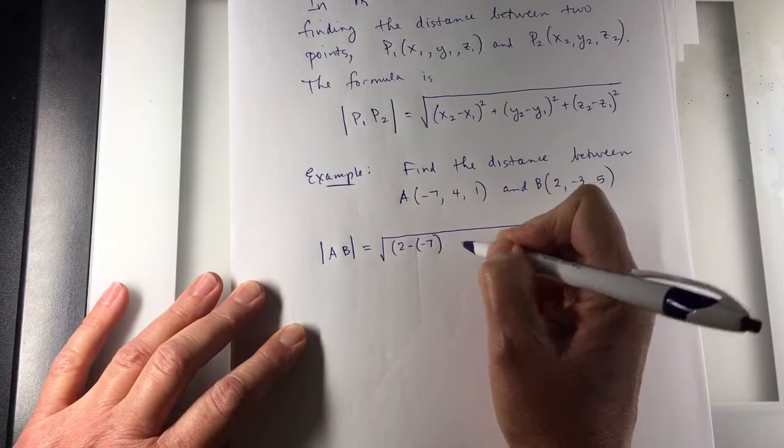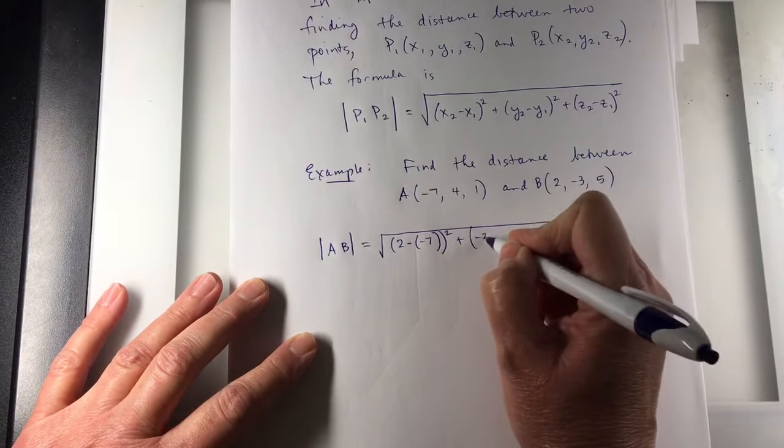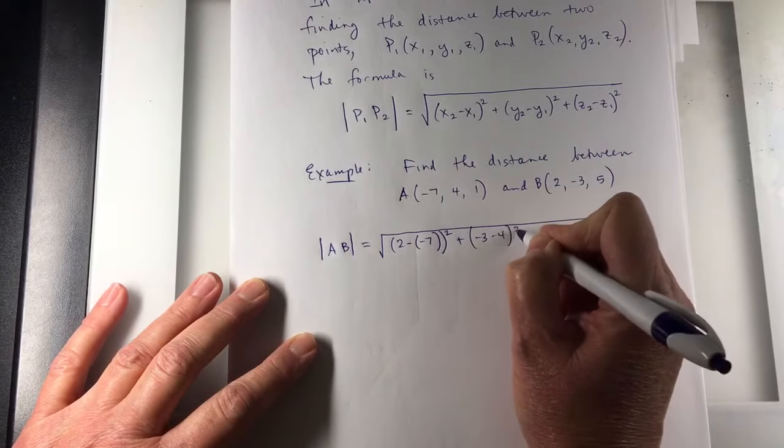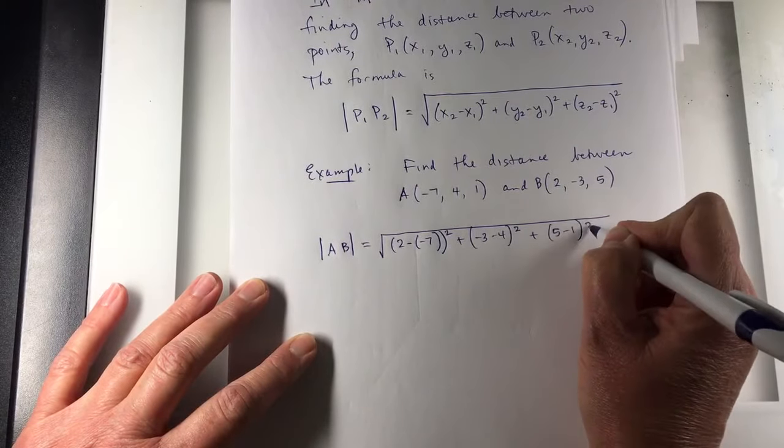2 minus negative 7, that's squared, plus negative 3 minus 4, that quantity squared, plus 5 minus 1, that quantity squared.